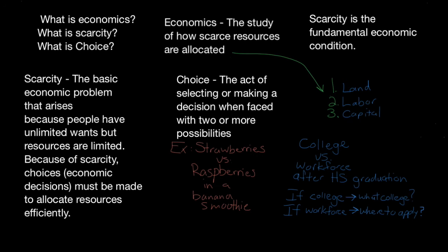So what is scarcity? Scarcity is the basic economic problem that arises because people have unlimited wants but resources are limited. Because of scarcity, choices — which we might also call economic decisions — must be made to allocate resources efficiently.